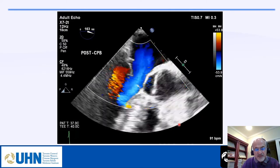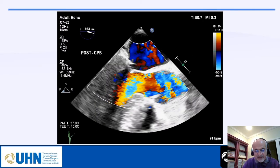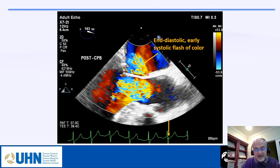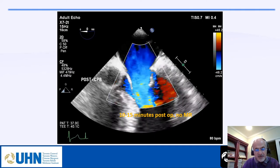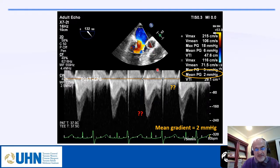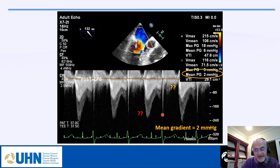The immediate post-op study shows a flash of color in early systole — if you track it into mid-systole it will disappear, so this should not be interpreted as residual MR. After 5 to 10 minutes that flash is gone. We always check the mean gradient because we don't want MS after repair, and we use only the dense part of the Doppler trace — the less dense part reflects pressure recovery or Doppler effect, which we see frequently after mitral valve repair or replacement.